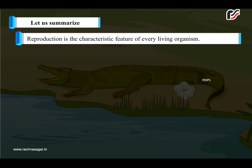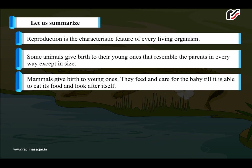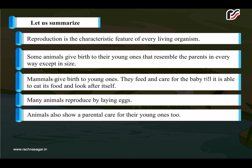Reproduction is the characteristic feature of every living organism. Some animals give birth to their young ones that resemble the parents in every way except in size. Mammals give birth to young ones and feed and care for the baby till it is able to eat its food and look after itself. Many animals reproduce by laying eggs. Animals also show parental care for their young ones.